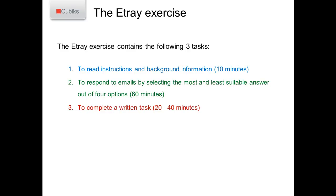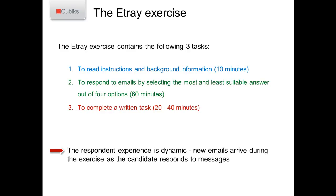What candidates have to do with these emails is identify, out of four options, which is the most effective response and which would be the least effective response. Then finally, once they've completed the emails, there's also a written task — for different versions of our E-TRAY that varies between 20 and 40 minutes. It's not absolutely essential for candidates to complete all tasks. For example, you might choose to have them just read the background information and respond to the most and least emails, or you might want to give them only the written task. That gives greater flexibility about how you use it.